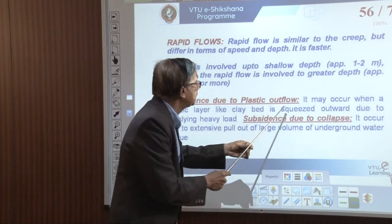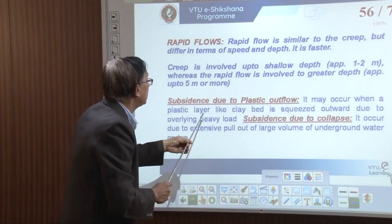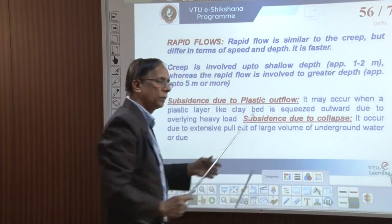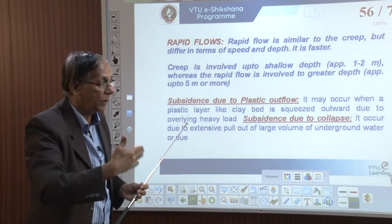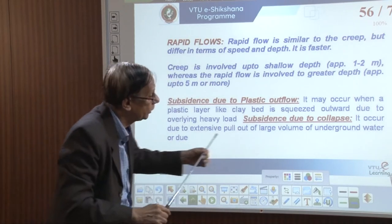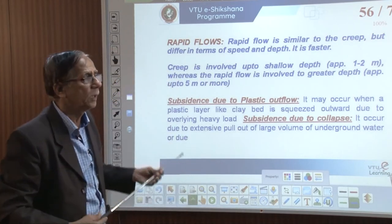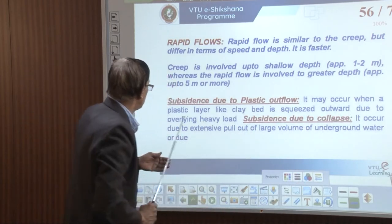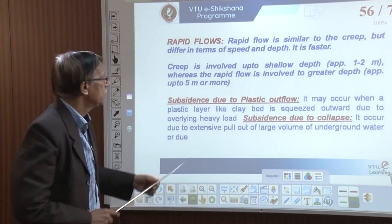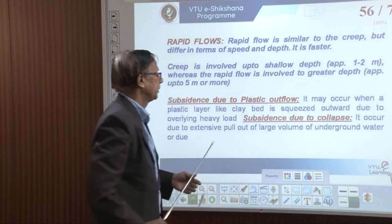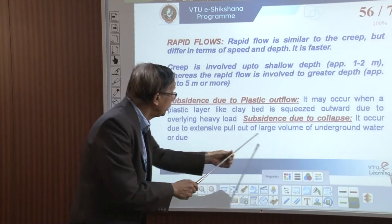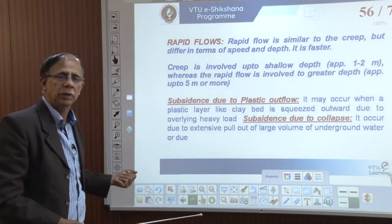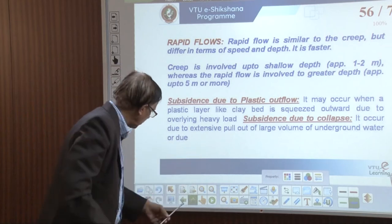Subsidence due to plastic outflow occurs when a plastic layer such as a clay bed is squeezed outward. Along the Kundapur–Bhatkal roadside, we have laterite below and a lithomerge clay — highly enriched — and when saturated, they are squeezed out due to overlying heavy load. Subsidence due to collapse occurs due to extensive removal of a large volume of underground water or earth material, especially in coal mines.